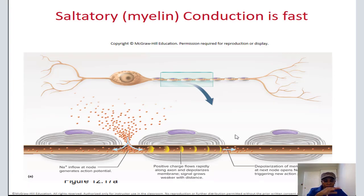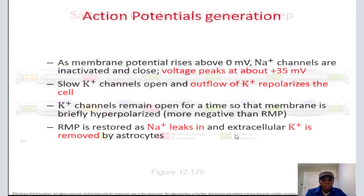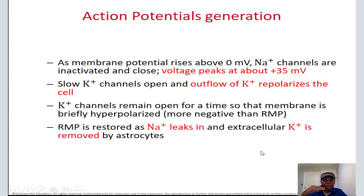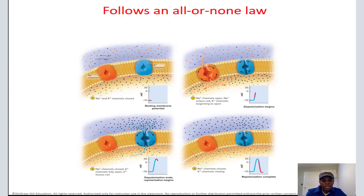If there's no myelin covering on the axon, the action potential will go very slowly. But with myelin, you have saltatory conduction — the action potential moves from node to node, which is fast. Here you can see the action potential moving from node to node. The resting membrane potential is restored because sodium leaks in again, and extra extracellular potassium is removed by astrocytes — the glial cells that protect and clean up. Astrocytes clean up the extracellular potassium around the neuron.